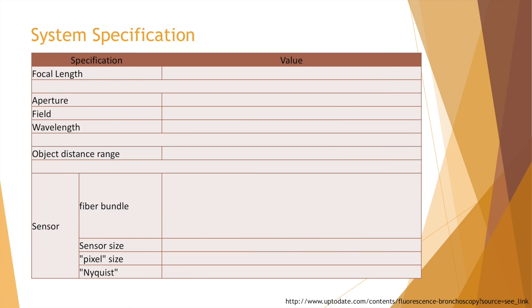Before starting to optimize the patent lens, we need to figure out the constraints and expectations from the system. We set the effective focal length to be 1 millimeter as per the patent, and the f-number to be as low as 2.5, because a large aperture enables high collection power of the weak light signal. Bronchoscopes available on the market generally have a full field of view of 85 to 120 degrees, so we're aiming for more than 120 degrees as our target design.